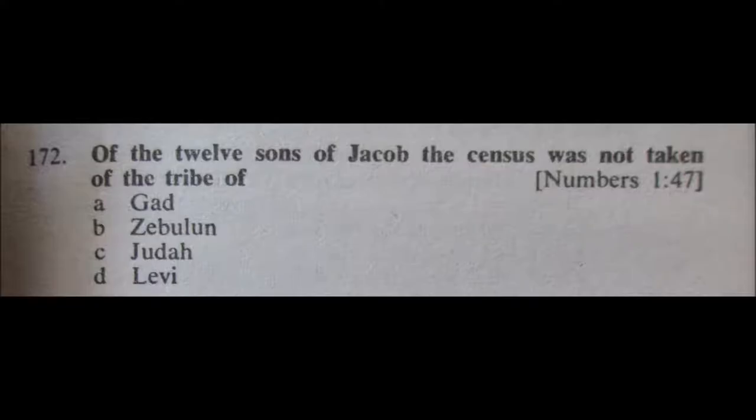172. And now we're in the book of Numbers. Of the 12 sons of Jacob, the census was not taken of the tribe of: A, Gad; B, Zebulun; C, Judah; or D, Levi. And I'm feeling pretty good that D, Levi, is the correct answer. They did not participate in that census, I don't think.